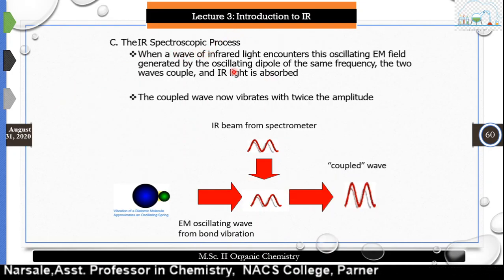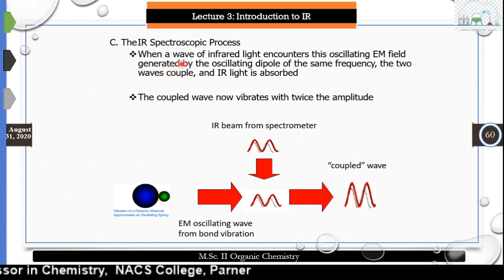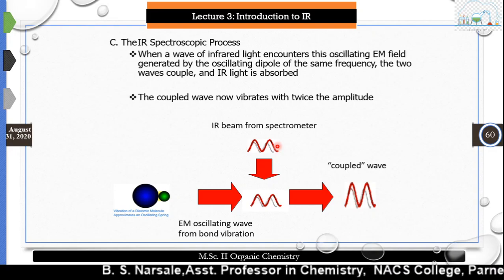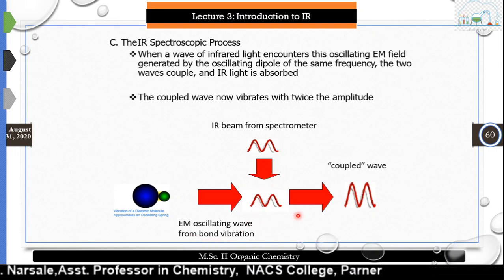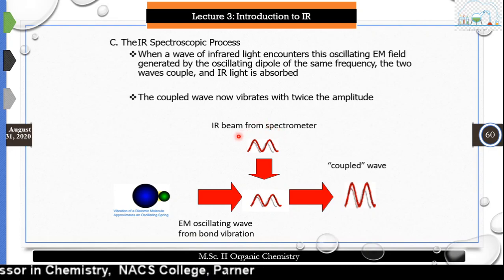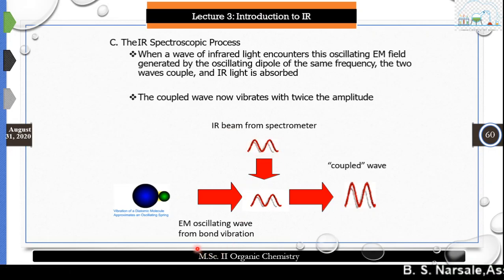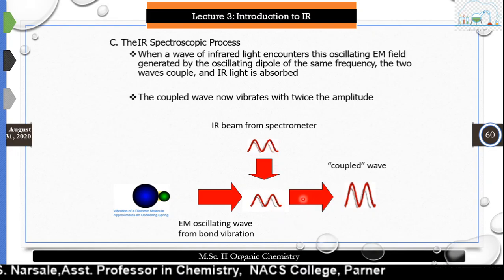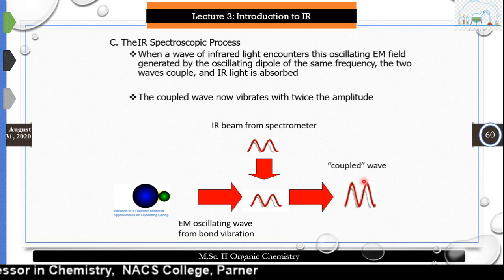In the spectroscopic process, the wave of infrared encounters an oscillating electromagnetic field which generates a dipole moment of the same frequency, and the IR is absorbed. The IR beam from the spectrophotometer — this electromagnetic radiation — due to the change in dipole moment, produces oscillating electromagnetic waves in the form of vibrations. When they couple, overtones or Fermi resonance will be observed.